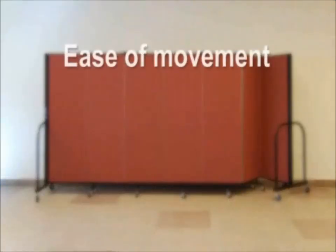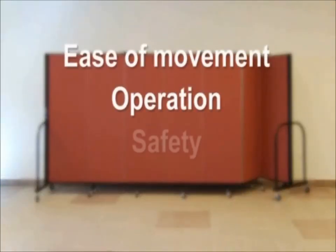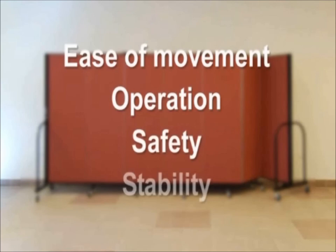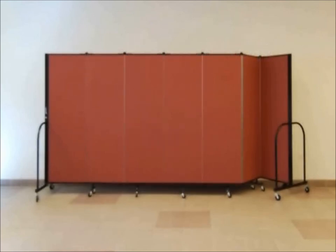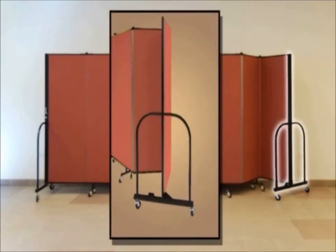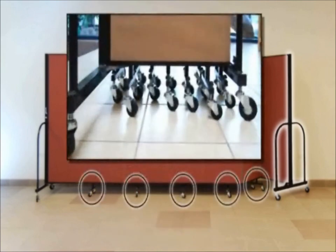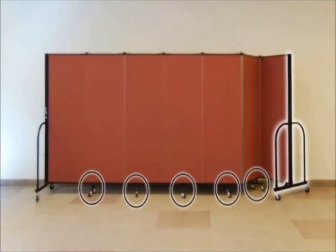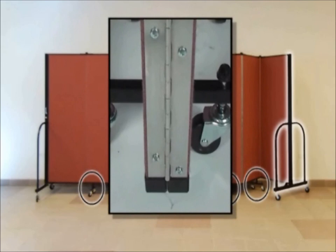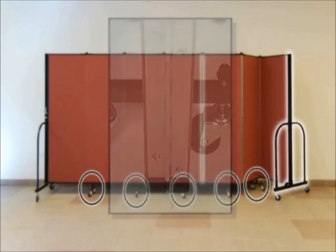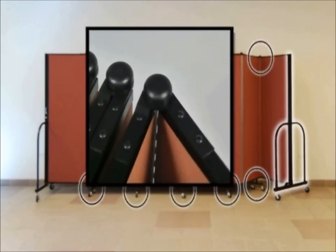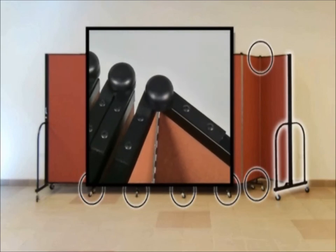Besides ease of movement and operation, safety and stability are key features customers desire. The stability in a portable room divider comes from four independent sources: the end support, the type, member, and spacing of interior casters, the means by which each panel is connected to the other, and the device on top used to help lock the divider in its desired position.